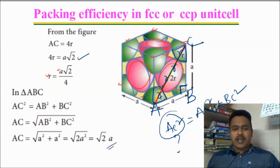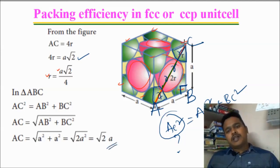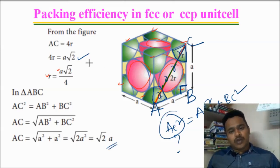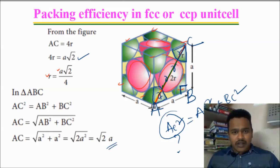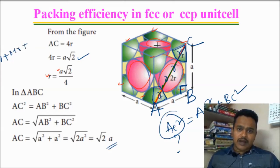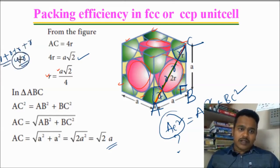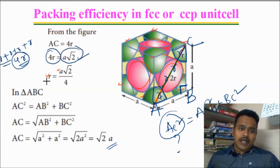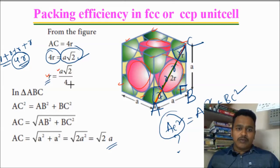Based on the calculation, the length of the face diagonal is √2·A. That equals the sum of all the radii: R + 2R + R = 4R. So 4R = √2·A, and therefore R = √2·A / 4.